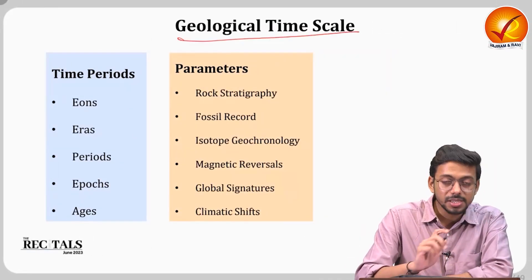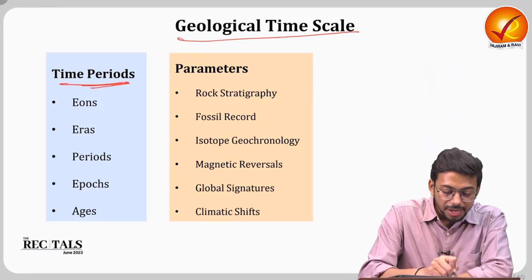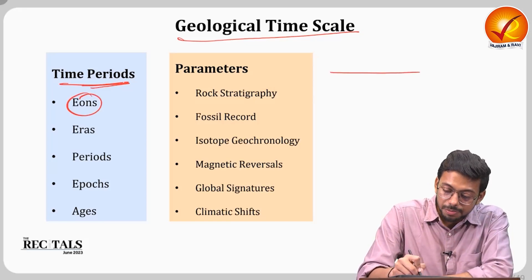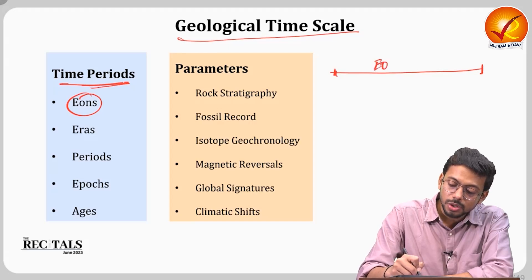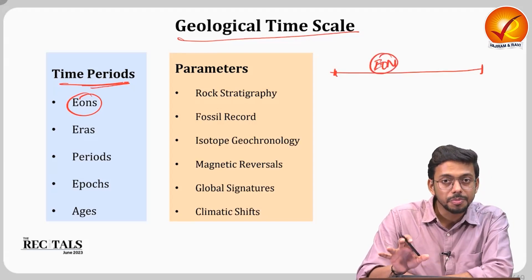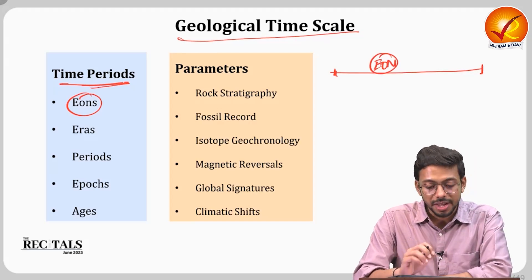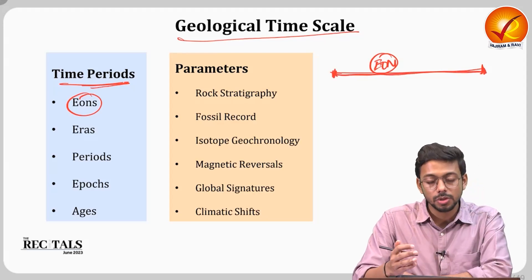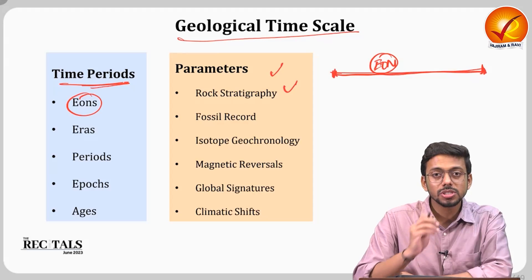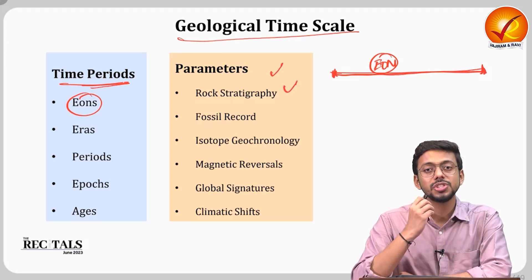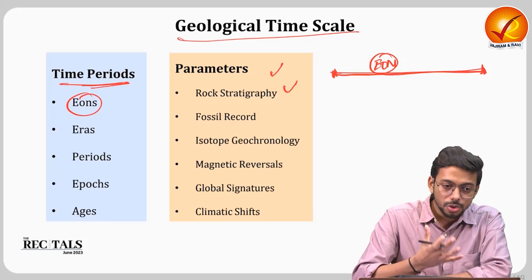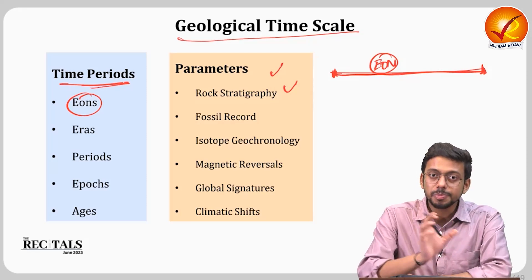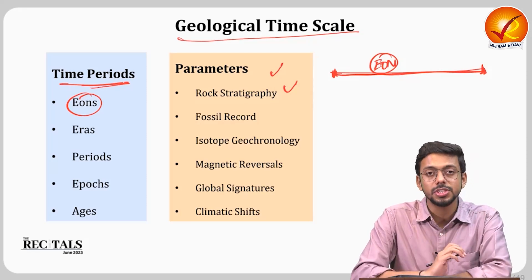Now let's look at the geological time scale. The time period is divided into multiple ranges. Eons are the broadest division. The length of these periods is not fixed by millions or billions of years — instead, they are defined by substantial changes in Earth's atmosphere, physical structure, or biodiversity. When such a change occurs, the era or period changes accordingly.